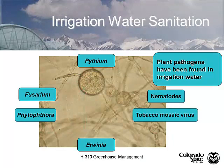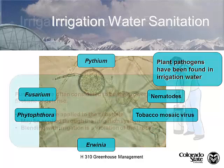That's a brief overview of general sanitation. I want to spend the rest of the time talking about water sanitation — an area I've focused on for probably the last 10 years of my career. All of these plant pathogens — Pythium, Fusarium, Phytophthora, Mosaic viruses, Erwinia — have been found in irrigation water in Colorado greenhouses. We've done the research.